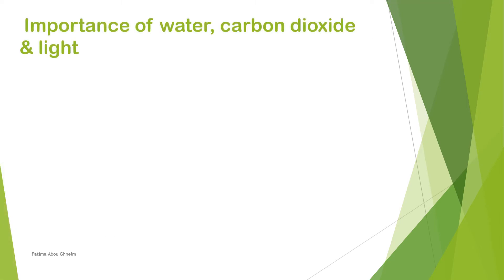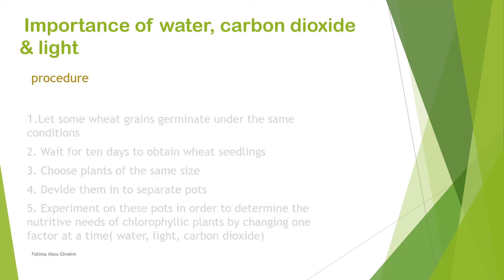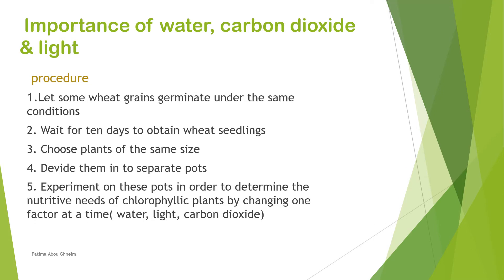Importance of water, carbon dioxide, and light. Let us begin by proving the importance of water, carbon dioxide, and sunlight. Procedure: let some wheat grains germinate under the same conditions — same medium, same temperature. Wait 10 days to obtain the wheat seedlings, choose plants of the same size, divide them into separate pots, and then experiment on these pots.